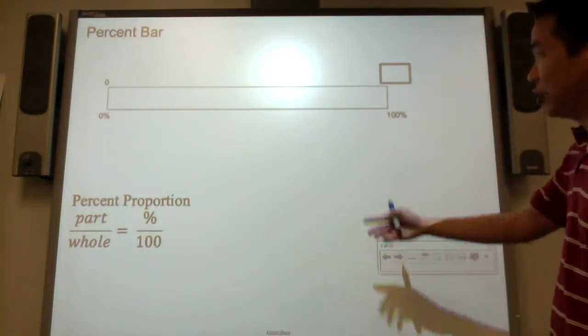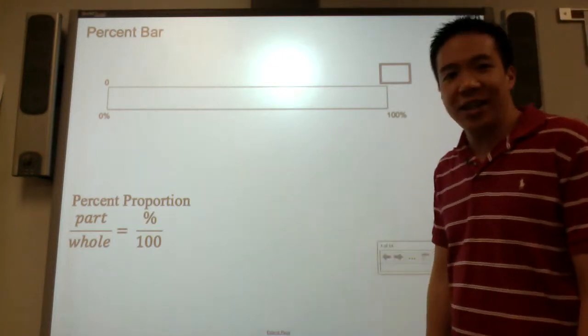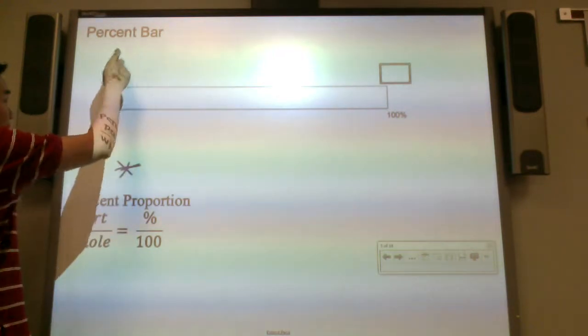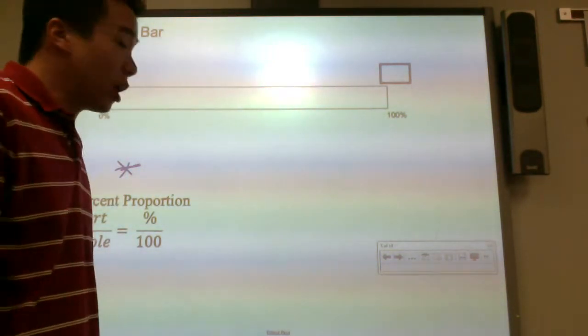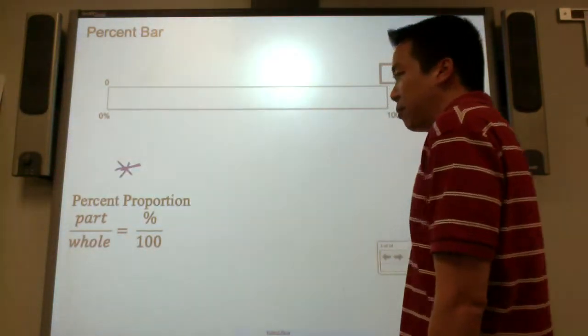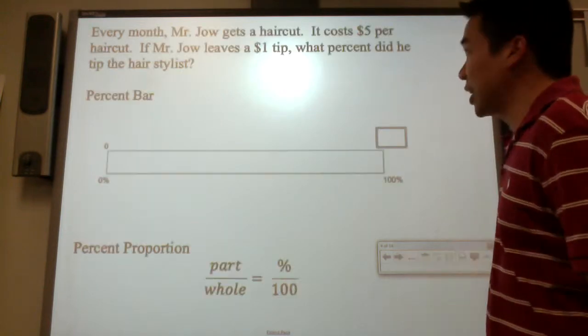You can use the percent bar or you can use the percent proportion. Either one is preferable. I personally like this one, but I also like this one. Actually I like both. It just depends on some of the problems. Part to the whole equals percent per 100.